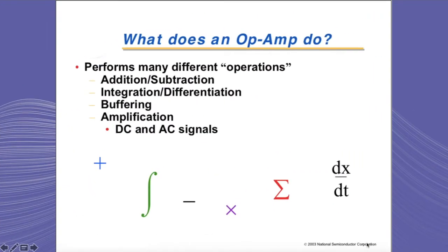Op-amps can perform many different operations. These operations include addition, subtraction, multiplication, integration, and more. They are also amplifiers, and amplifiers can perform buffering or they can amplify DC and AC signals.